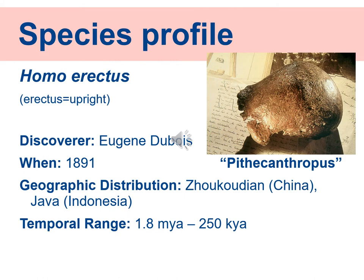Homo erectus was found by a naturalist similar to Charles Darwin, but his name was Eugene Dubois. He sailed around Southeast Asia recording observations of wildlife, geography, and geology. He came upon caves along the Solo River in Java, Indonesia, and found a skullcap and a femur. He named it Pithecanthropus erectus — 'pith' meaning ape, 'anthropos' meaning human, 'erectus' meaning upright. Later it was reclassified into the genus Homo and termed Homo erectus.